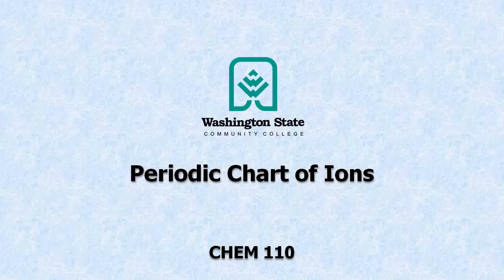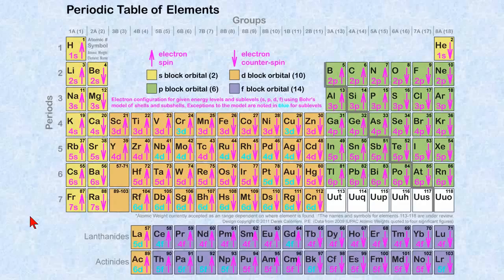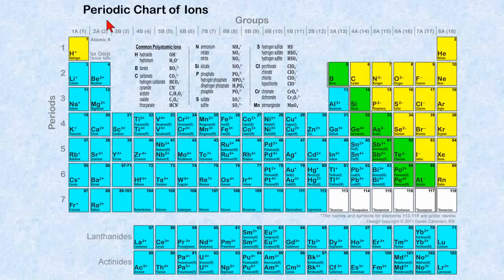This screencast is on the periodic chart of ions. We're going to use the periodic table of elements and combine it with our previous work with orbitals and electron configurations to come up with a study guide called the periodic chart of ions.